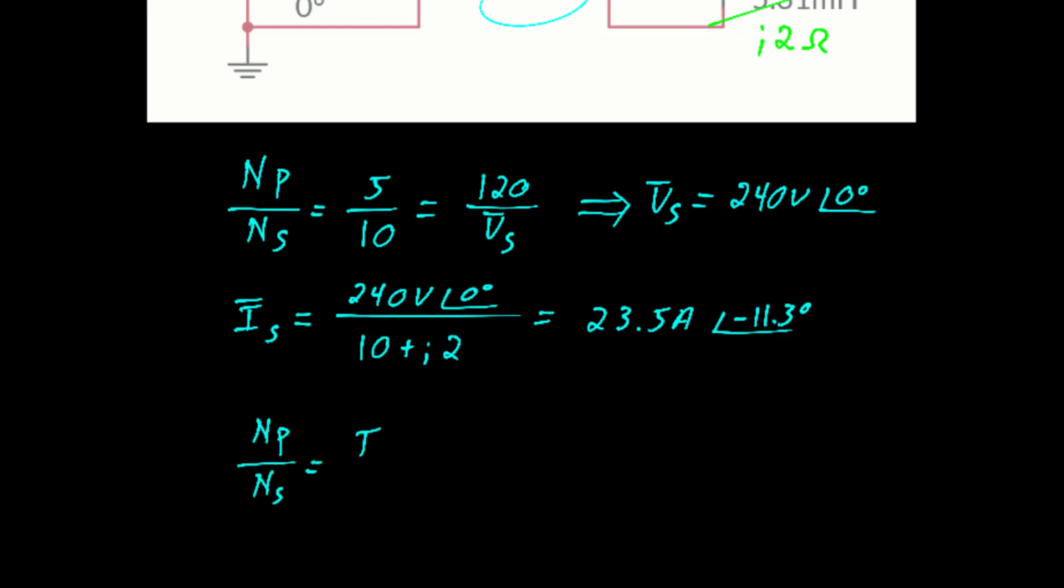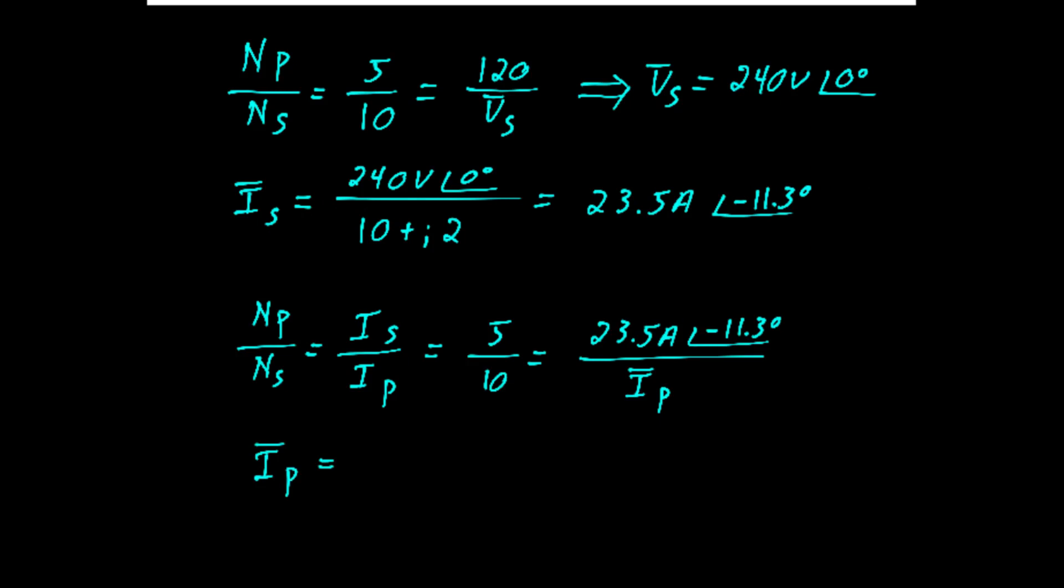From there, we can calculate the current back onto the primary if we choose. And that works out to be about 47 amps at a phase angle of negative 11 degrees.